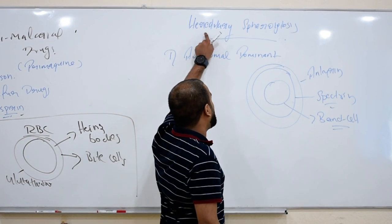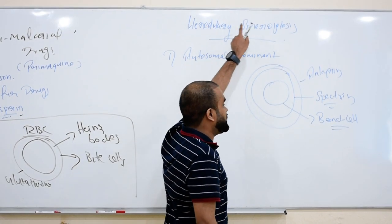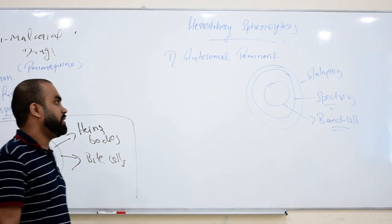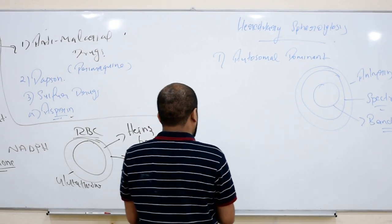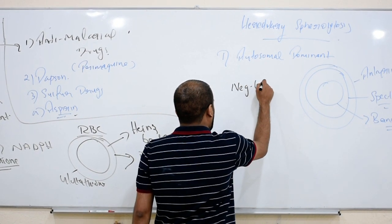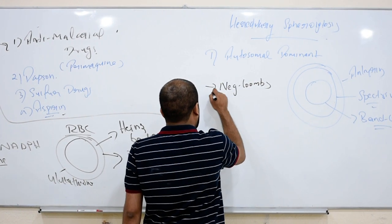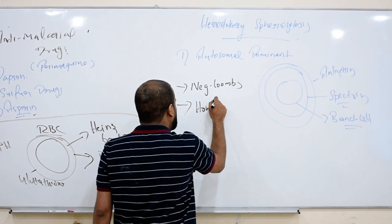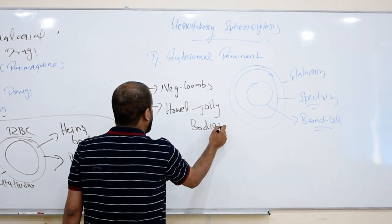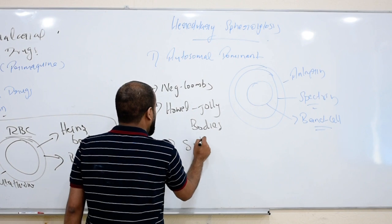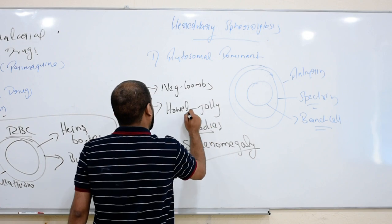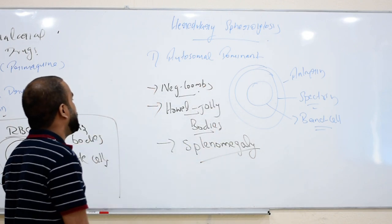If there is any mutation in any of these proteins, they can have change in shape of RBC and size. That condition itself is called hereditary spherocytosis. Remember it is autosomal dominant. Now remember it is also negative Coombs test, negative Coombs. Here you will see a specific body called Howell-Jolly bodies. Because what is affected here? Spleen is affected here. As a result we can have splenomegaly, splenomegaly.